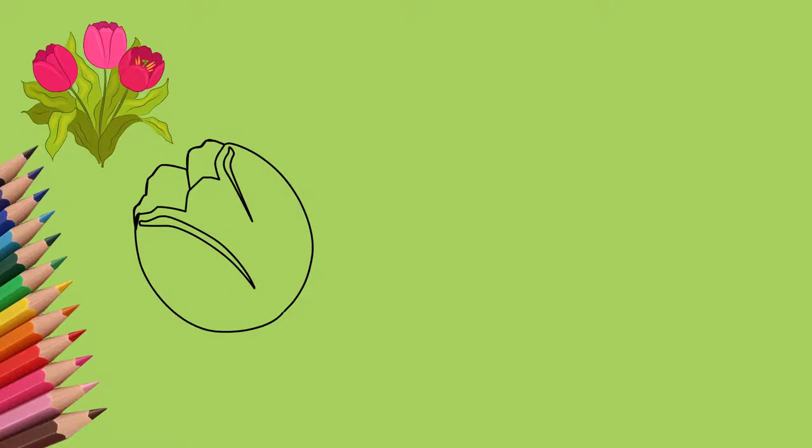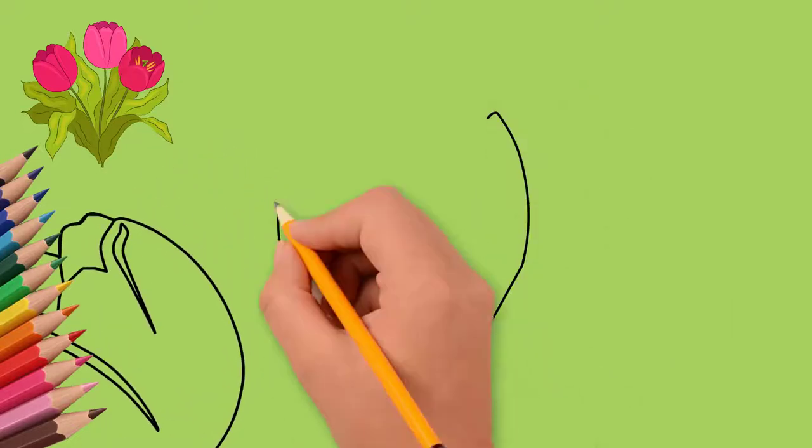First, draw one tulip. Draw an oval. Draw each petal separately.